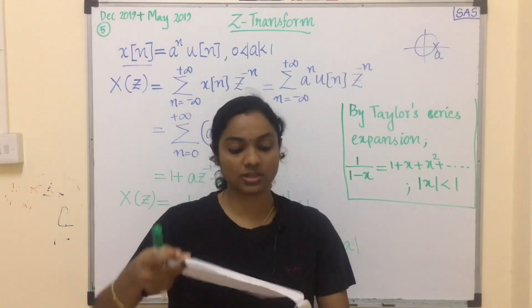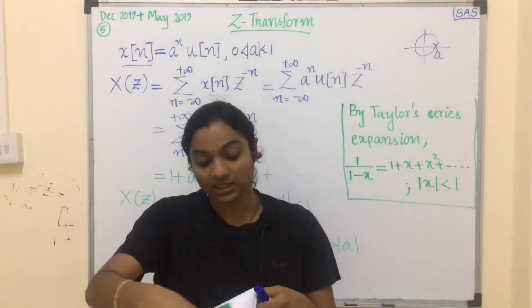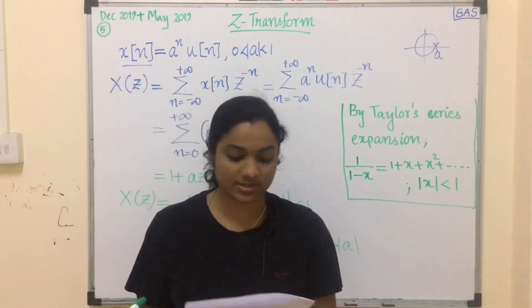In the December 2019 question paper the question was: consider the sequence x(n) equal to a^n. If x(n) is a causal sequence, prove that the ROC of X(z) is the exterior of the circle of radius a, where X(z) is the Z transform of x(n). Whereas in the May 2019 question paper the question asks directly to find the Z transform and ROC of the signal x(n) = a^n · u(n).